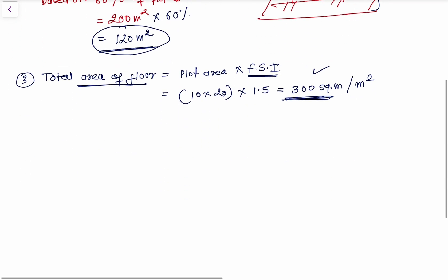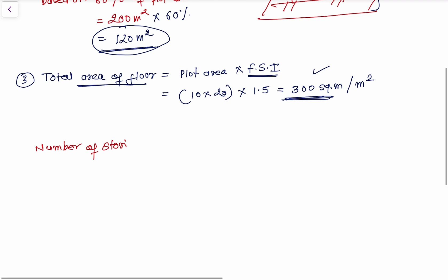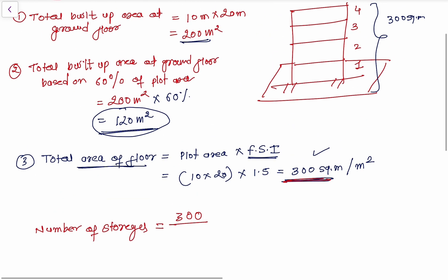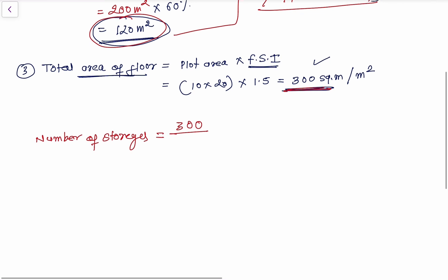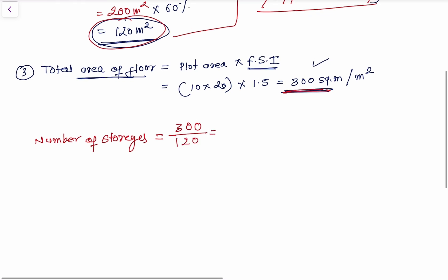Based on this, we need to calculate how many number of floors we can construct. The number of stories is calculated by taking your total area of floor — which is 300 — divided by the minimum of the two values, which based on the building bylaws is 120. So 300 divided by 120 gives you 2.5 stories.